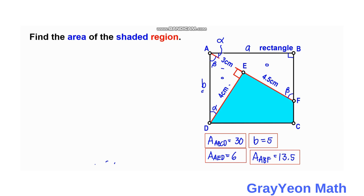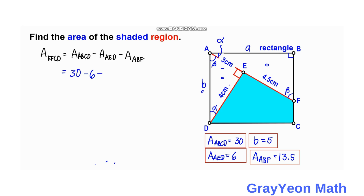Now for the final step: the area of region EFCD equals the area of rectangle ABCD minus the area of triangle AED minus the area of triangle ABF. Substituting the values: 30 minus 6 minus 13.5. Therefore the area of EFCD equals 10.5 square centimeters.